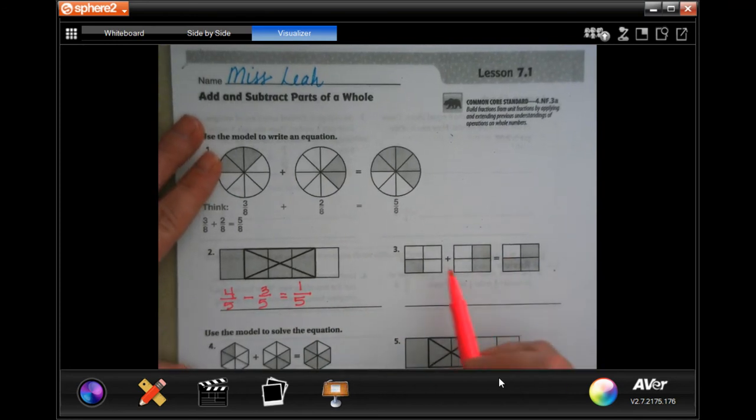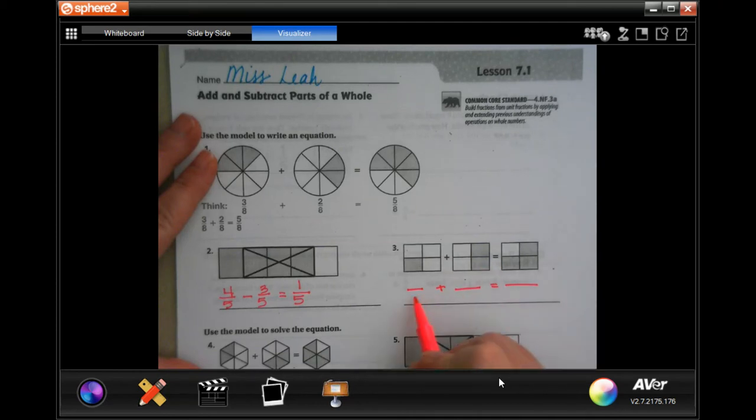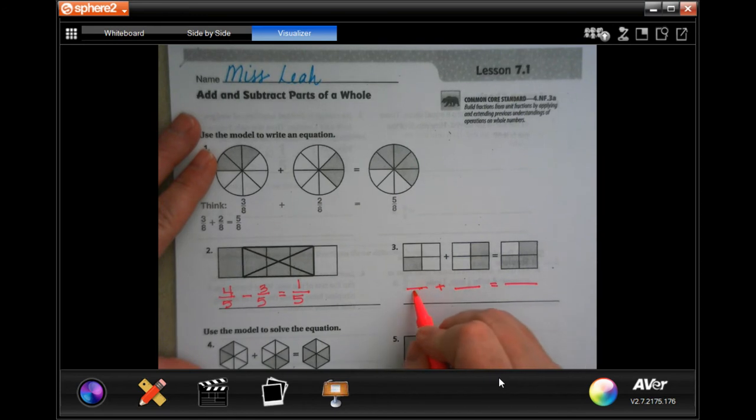So now each one of these has four blocks in it. That means that our answer, all of our fractions are going to have a four as a denominator because there are four total in each one.